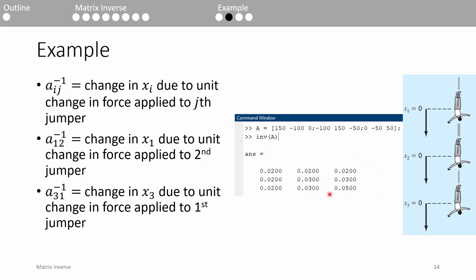Finally, let's look at the third column. The numbers indicate that applying an additional 1 newton force to the third jumper results in the first and second jumpers moving the same distances as when the force was applied to the second jumper.